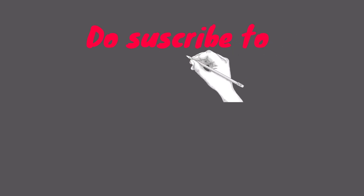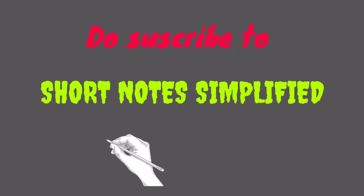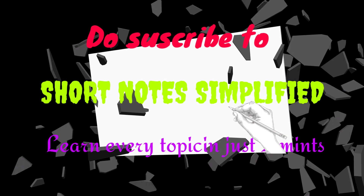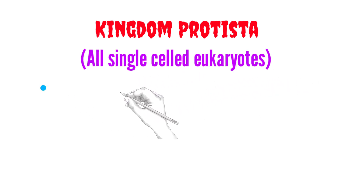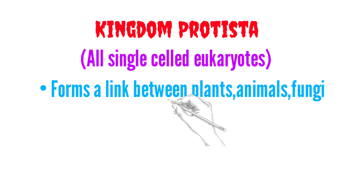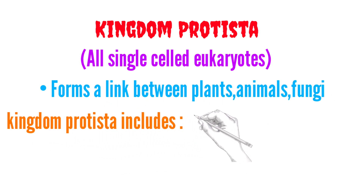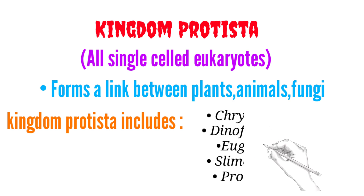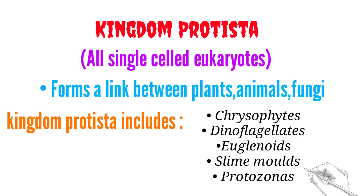Subscribe to Short Notes Simplified — learn every topic in just two minutes. Kingdom Protista: all single-celled eukaryotes, forms a link between plants, animals, and fungi. Kingdom Protista includes chrysophytes, dinoflagellates, euglenoids, slime molds, and protozoans. Let's discuss one by one.